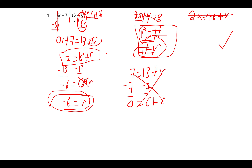For our first problem, we have 6r plus 7 equals 13 plus 7r. What we want to do is get all of our variables onto one side of the equation and all of our constants or numbers on the other side — into the form r equals some number. To do that, we're going to use inverse operations to move all of our variables to one side.